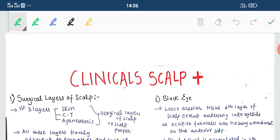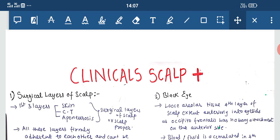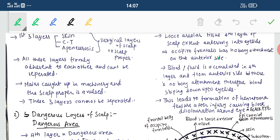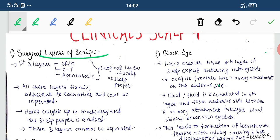We have seven clinicals. The first one is the surgical layer of the scalp. The surgical layers of the scalp are the first three layers: skin, connective tissue, and aponeurosis. These are the surgical layers of scalp, or the scalp proper. All these three layers are firmly adherent to each other and cannot be separated.